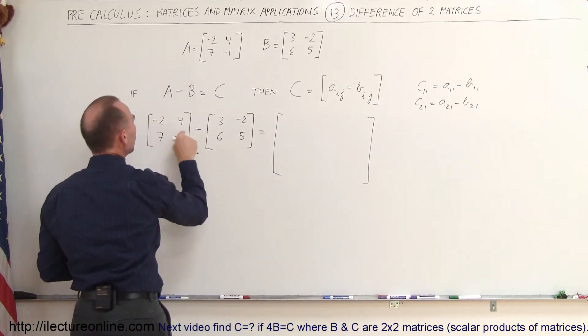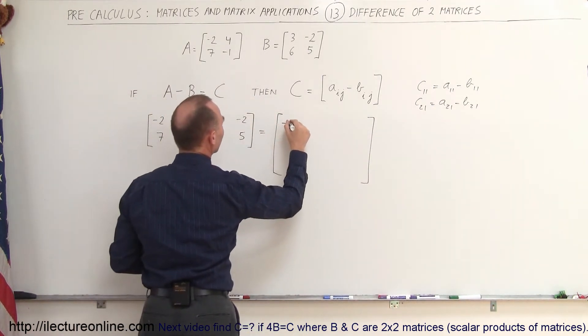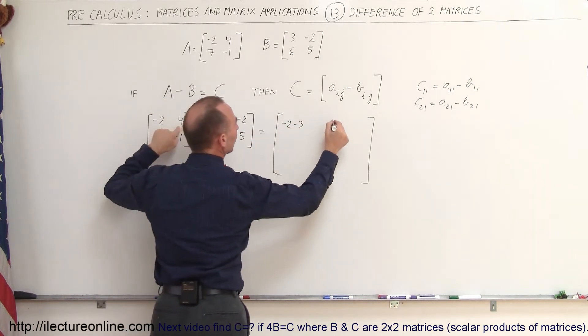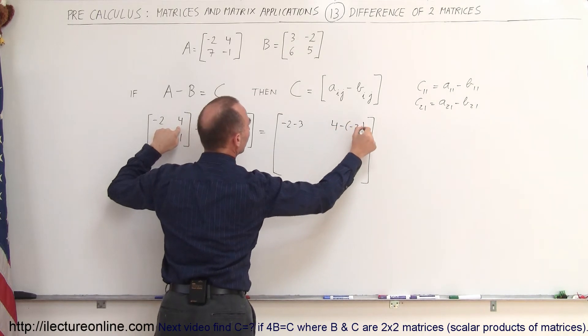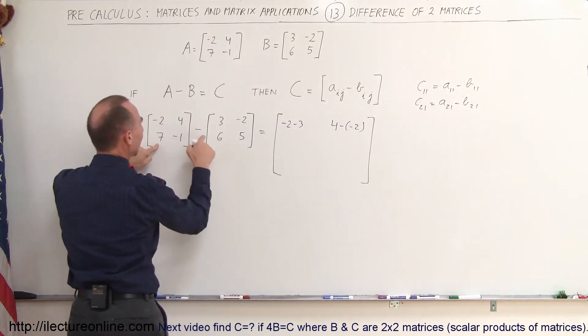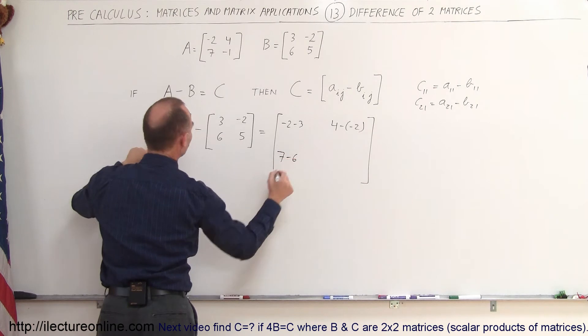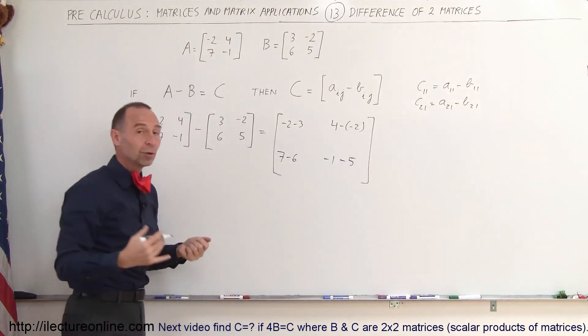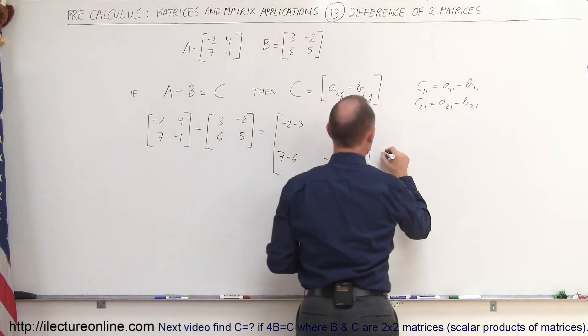So minus 2 minus 3 becomes this. Minus 2 minus 3 will be the first element. Here we get 4 minus a minus 2, so 4 minus a minus 2. Here we get a 7 minus 6, 7 minus 6. And here we have a minus 1 minus 5.